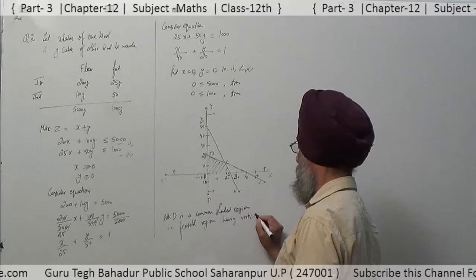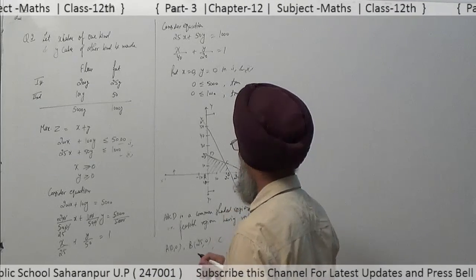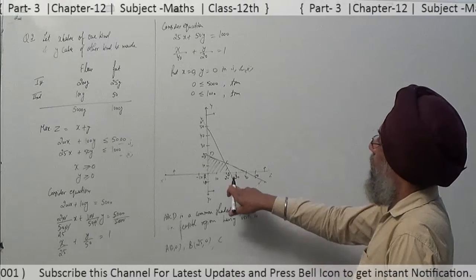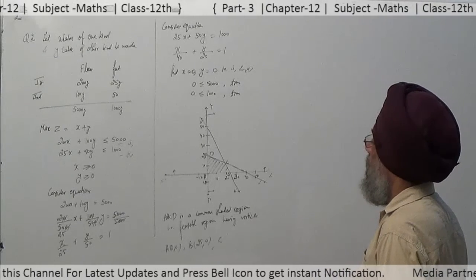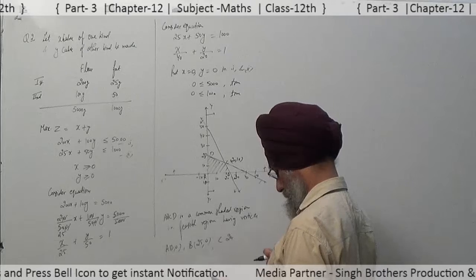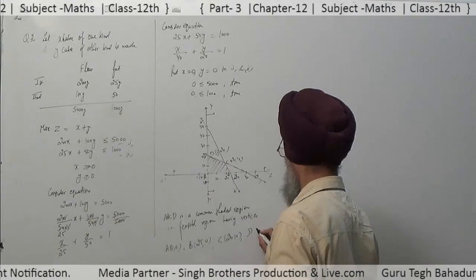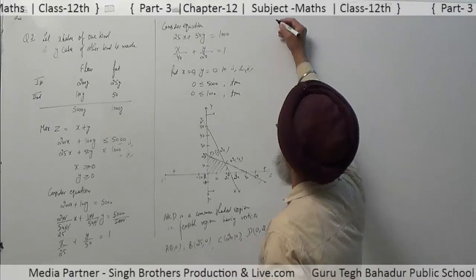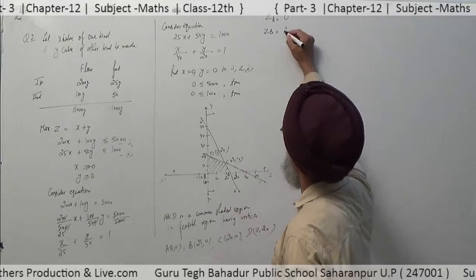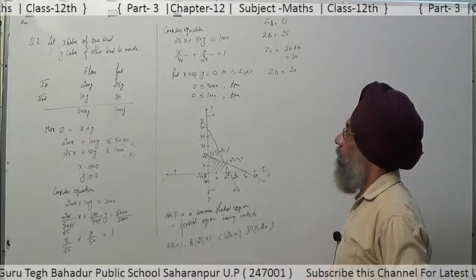The feasible region has vertices: A = (0, 0), B = (25, 0), C = (20, 10), and D = (0, 20). The value of z = x + y at each corner: at A it is 0, at B it is 25, at C it is 20 + 10 = 30, and at D it is 20. The maximum value is 30.